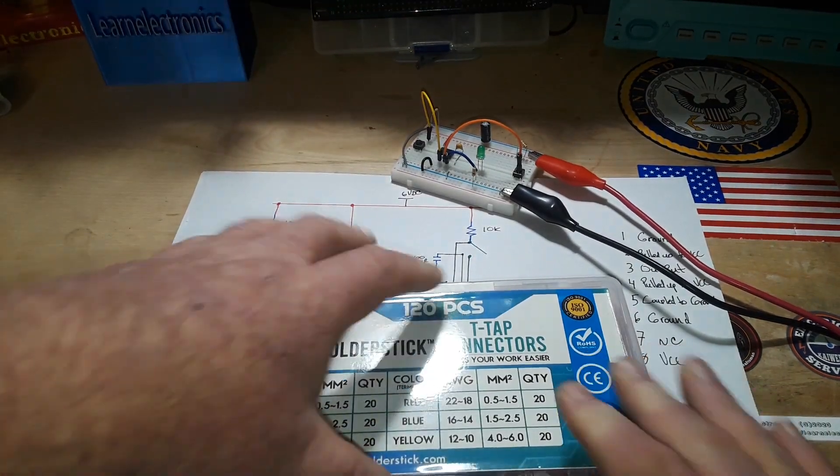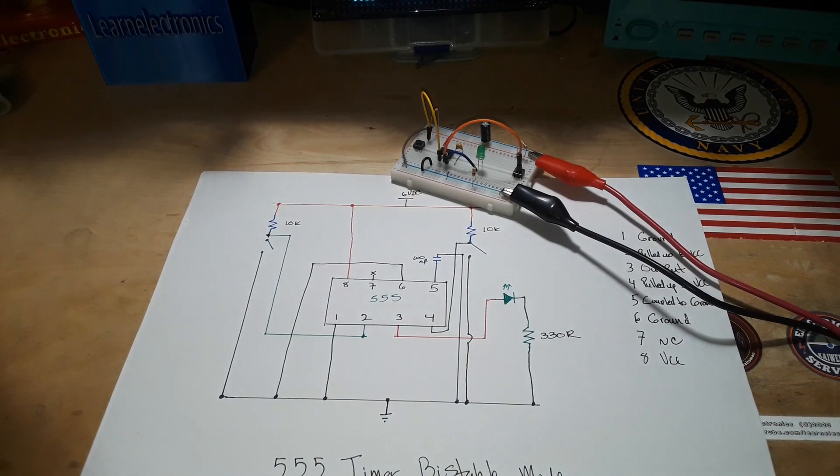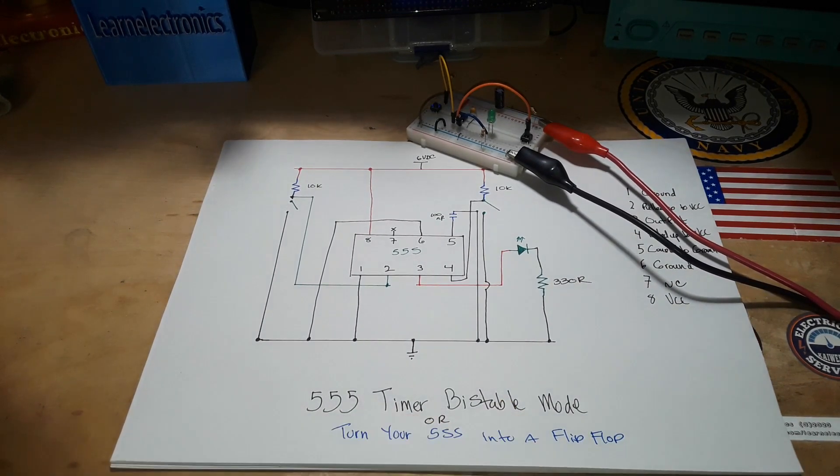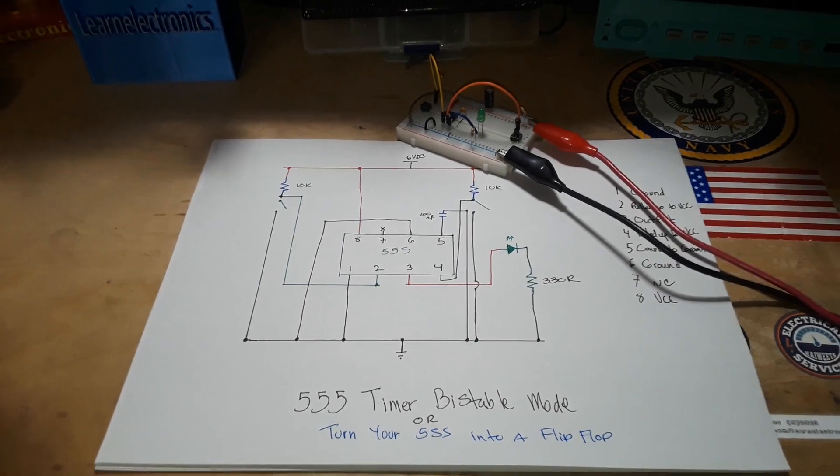Today we're talking about our old friend the 555 timer in one of its modes. Today we're talking about what I will call the second mode of the 555 timer, the bistable mode, or what I like to call how to turn your 555 timer into a flip-flop.